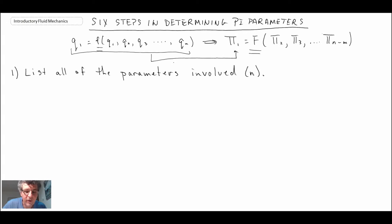The first step is to list all the parameters involved. When we looked at drag on a sphere, we talked about the force, the velocity, the diameter, the density, and the viscosity.